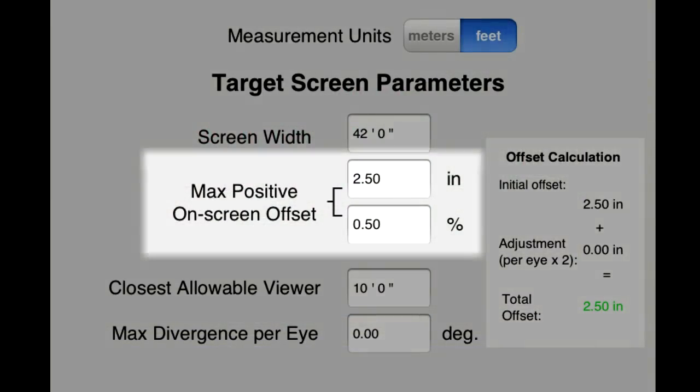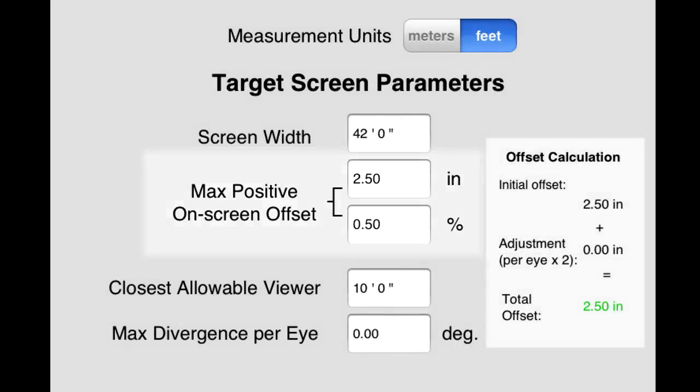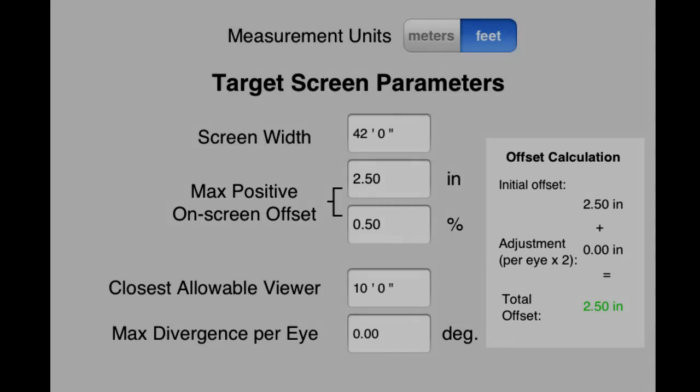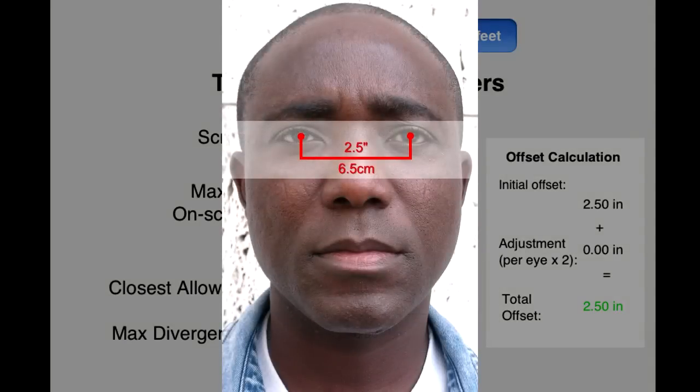Next, we'll set our max positive on-screen offset, which tells the program how large the positive parallax can get before it should be considered divergence. We'll leave it at 2.5 inches, which is equal to about 6.5 centimeters, as that's the average distance between most adults' eyes.